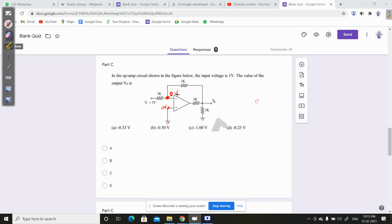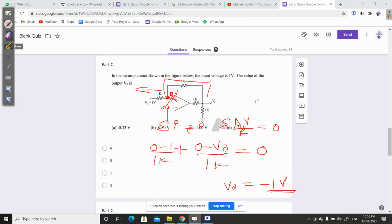Then (0 minus 1) by 1k plus (0 minus V0) by 1k equals 0. This represents summation of currents equals 0. Solving this equation, we get V0 equals minus 1, which is answer option C.